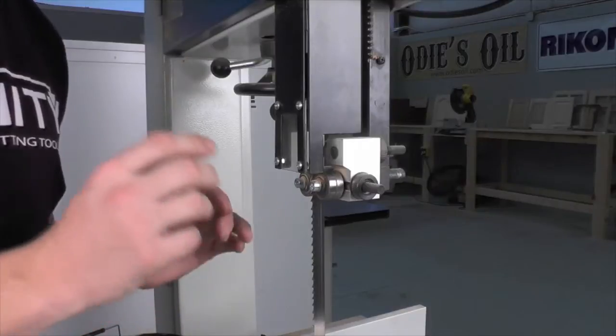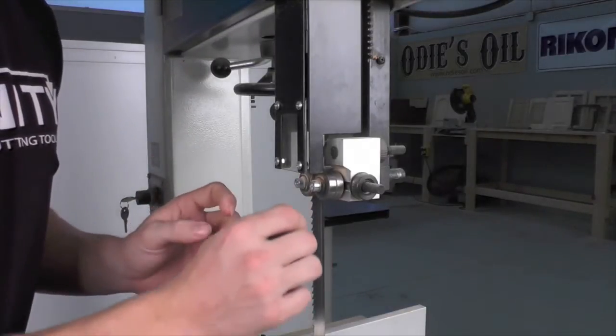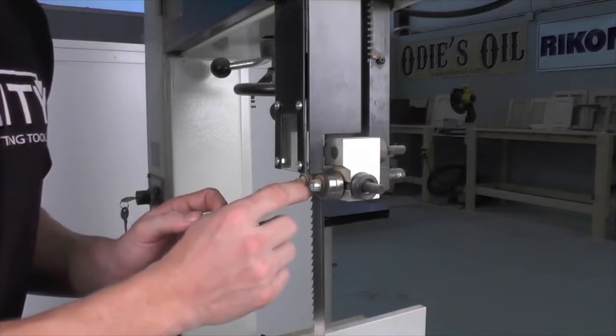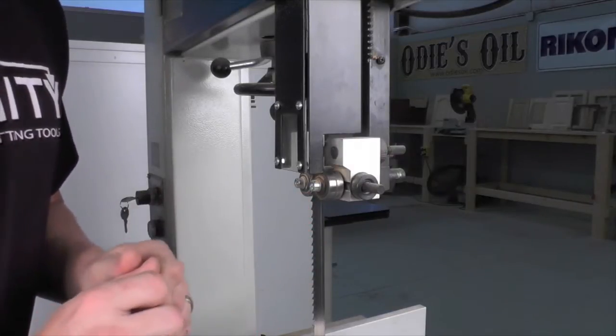One trick for getting these guides set just right is to use a piece of notebook paper as a feeler gauge so you can slide it up in between the blade and each guide. This is going to give you the perfect setting for those guides.